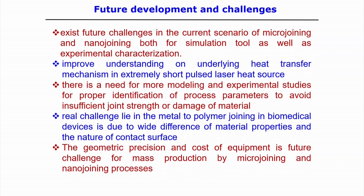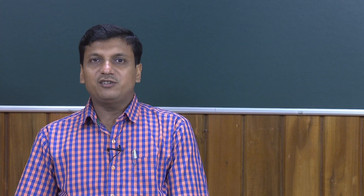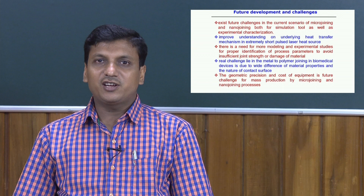After discussing micro joining and nano joining technologies, some numerical problems will be discussed to help understand the processes mathematically. Let us look into examples for micro joining and nano joining technologies. In a pulsed laser micro welding process, the following parameters are noted: laser scanning speed 4 mm/s, pulse energy 6 J, pulse width 5 ms, pulse frequency 20 Hz, and the pulse shape is assumed to be square.